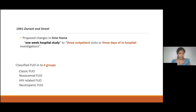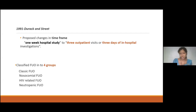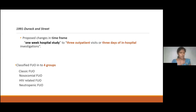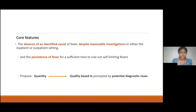The three-week criterion came to exclude self-limiting fevers, and the 101 Fahrenheit threshold gave an objective value for temperature measurements. Investigations for one week in hospital stay were included to define the level of investigation needed before concluding PUO. Then 30 years later, Durack and Street wanted to change this definition — they changed the timeframe from one week of hospital study to three outpatient visits or three days of in-hospital investigations. Apart from that, they classified FUO into four groups: classic FUO, nosocomial FUO, HIV-related, and neutropenic FUO. We still don't have a universal definition for PUO.